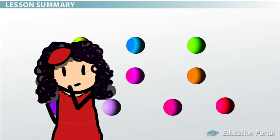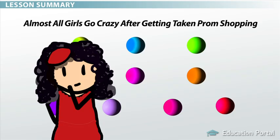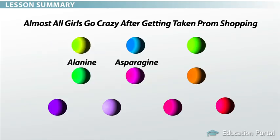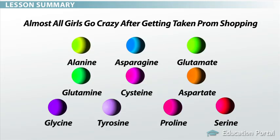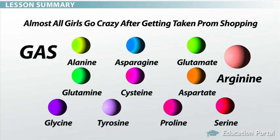The remaining ten non-essential amino acids can be remembered using the mnemonic 'Almost All Girls Go Crazy After Getting Taken Prom Shopping,' which stands for alanine, asparagine, glutamate, glutamine, cysteine, aspartate, glycine, tyrosine, proline, and serine. We notice that amino acids that start with one of the letters in the word GAS are non-essential — of course, this takes into account our semi-essential amino acid, arginine. See you next time!